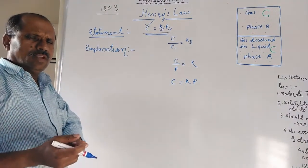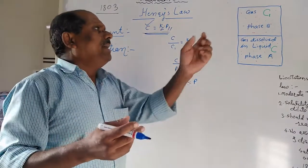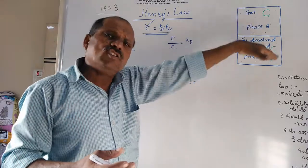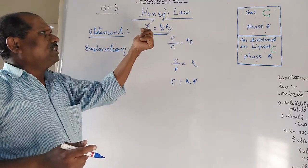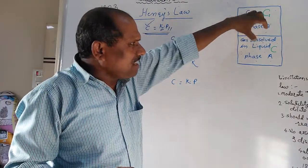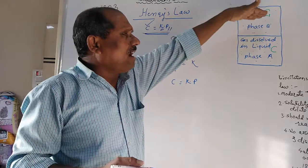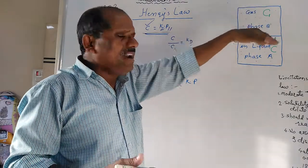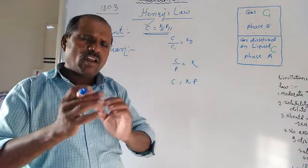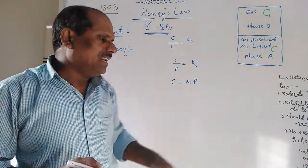At constant temperature, the solubility of a gas is directly proportional to its pressure, mathematically given as C = Kp. Phase B is a gas and phase A is a liquid. The gas and liquid are shaken together vigorously and kept on stable ground for some time, after which an equilibrium is set up between them.